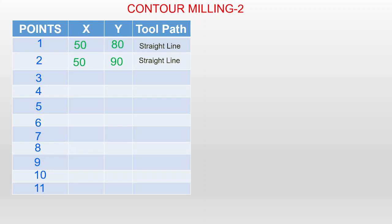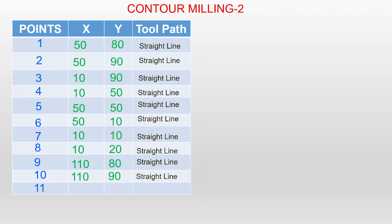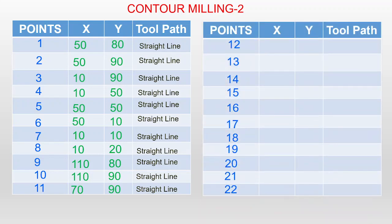Point 3: X = 10 mm, Y = 90 mm. Point 4: X = 10 mm, Y = 50 mm. Point 5: X = 50, Y = 50. Point 6: X = 50, Y = 10. Point 7: X = 10, Y = 10. Point 8: X = 10, Y = 10. Point 9: X = 110, Y = 80. Point 10: X = 110, Y = 90. Point 11: X = 70, Y = 90. All are straight line paths.